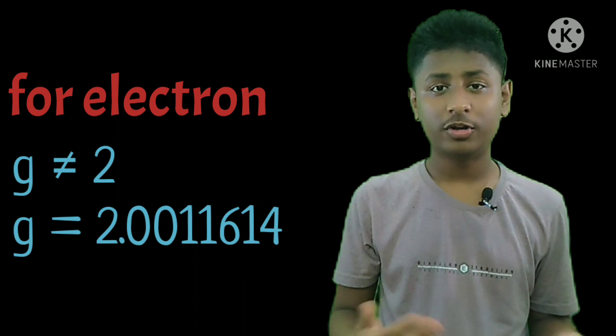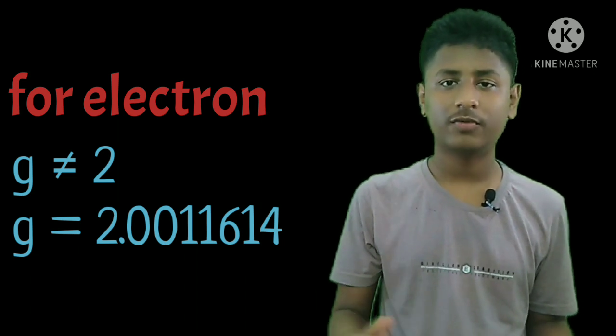For years after that, it was thought that the g-factor of the electron and muon is exactly two. But later it was observed that the g-factor of the electron is not actually two—it is 2.0011614.